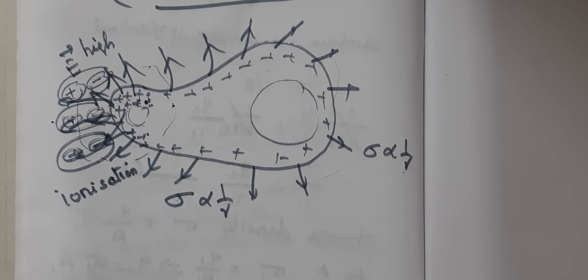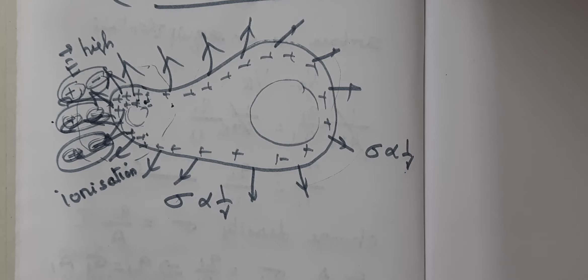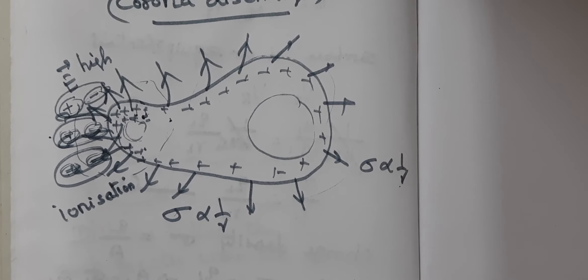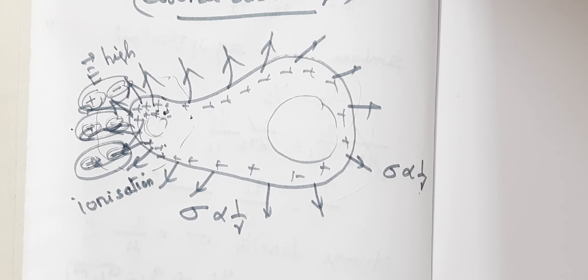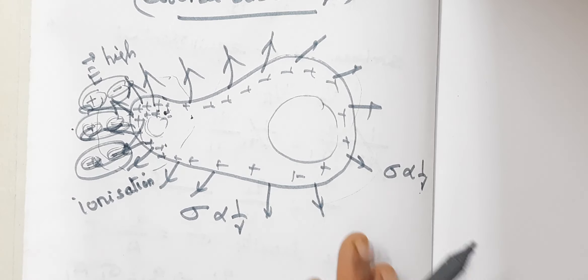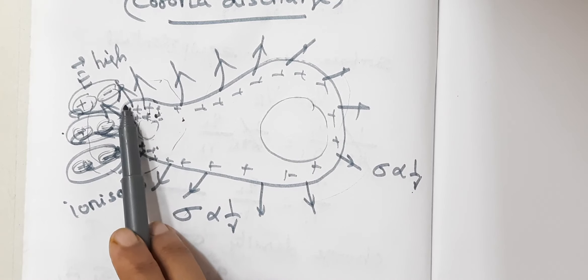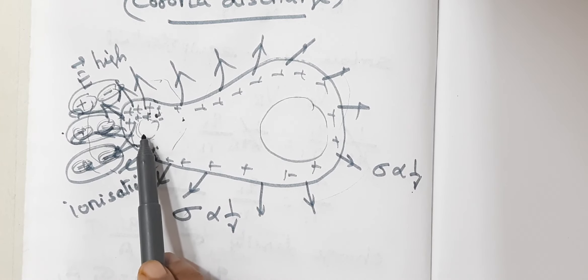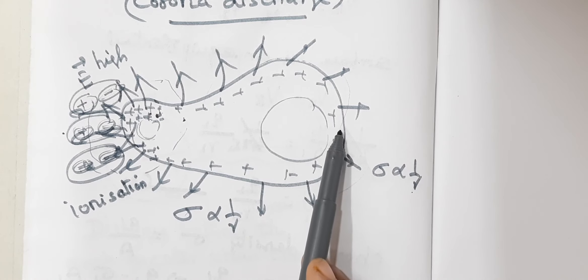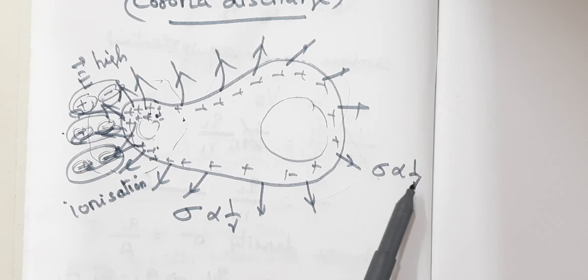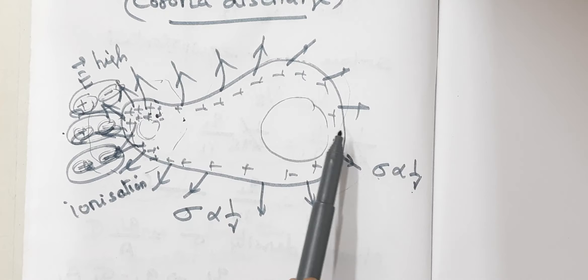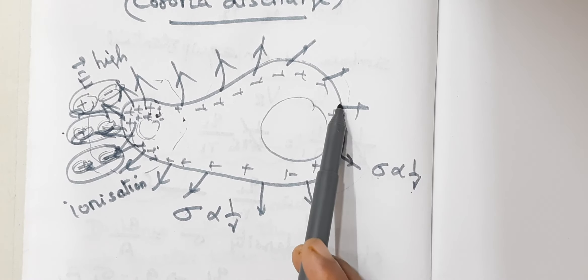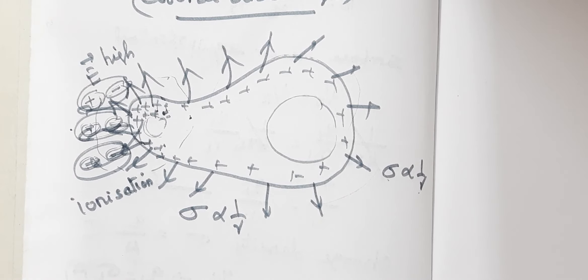Action at points means the leakage of charges — charges get reduced at the sharp edge of the conductor. This is known as action at points or corona discharge. We considered the irregular shape of a conductor. One side the radius of curvature is very small, the other side the radius is very large. Since charge density is inversely proportional to the radius, there is more accumulation of charges on the sharper side and less on the other side.